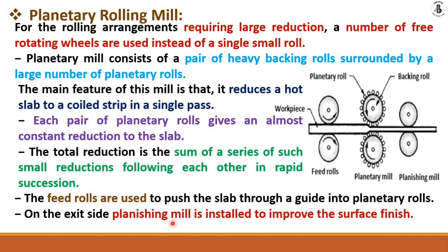On the exit side, planishing mills are installed to improve the surface finish of the workpiece material. In a single pass, the most reduction is possible with planetary rolling mills compared to other rolling mills.